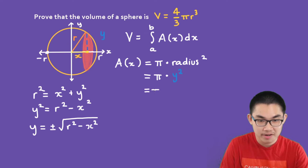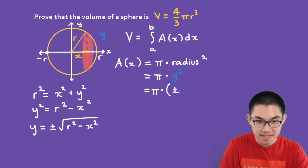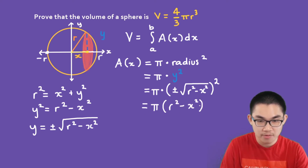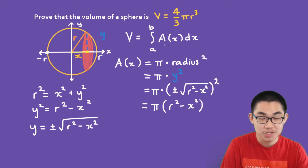Therefore, the area equals pi times the square root of R squared minus x squared, all squared, which simplifies to pi times R squared minus x squared. So we are ready to substitute this formula into our volume equation.